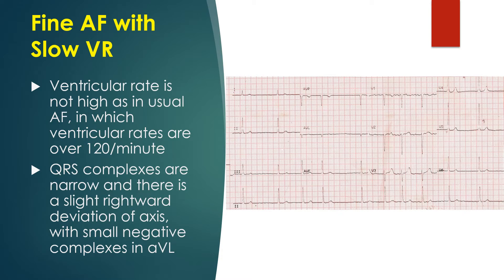In this case with fine atrial fibrillary waves, the ventricular rate is not high as in usual atrial fibrillation, in which ventricular rates are over 120 per minute. The QRS complexes are narrow and there is slight rightward deviation of axis with small negative complexes in AVL.